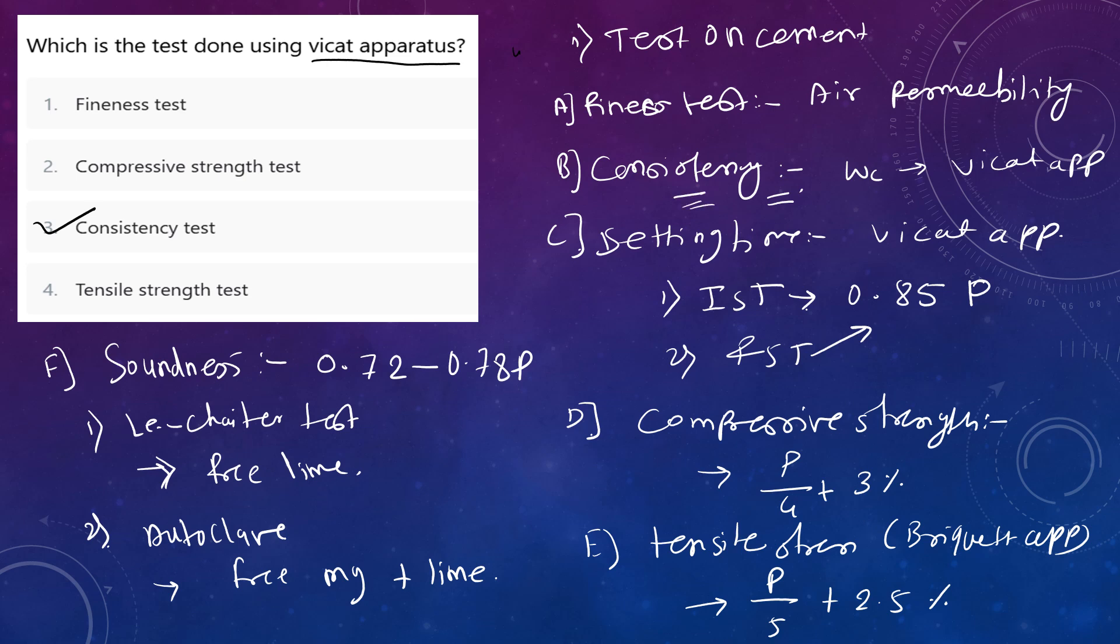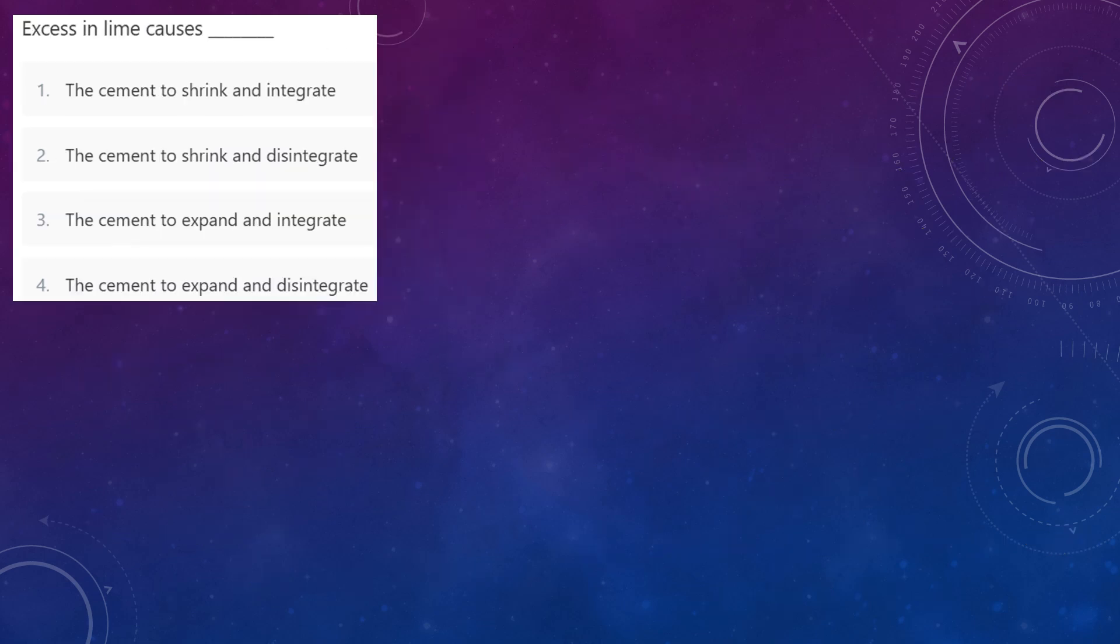This is all about tests conducted on cement. Next, we move to the second question: excess in lime causes what? Lime is a content of cement. Because of excess lime content, the cement gets expanded and disintegrated. The last option is correct. This question is about cement contents, so we will discuss the content one by one.